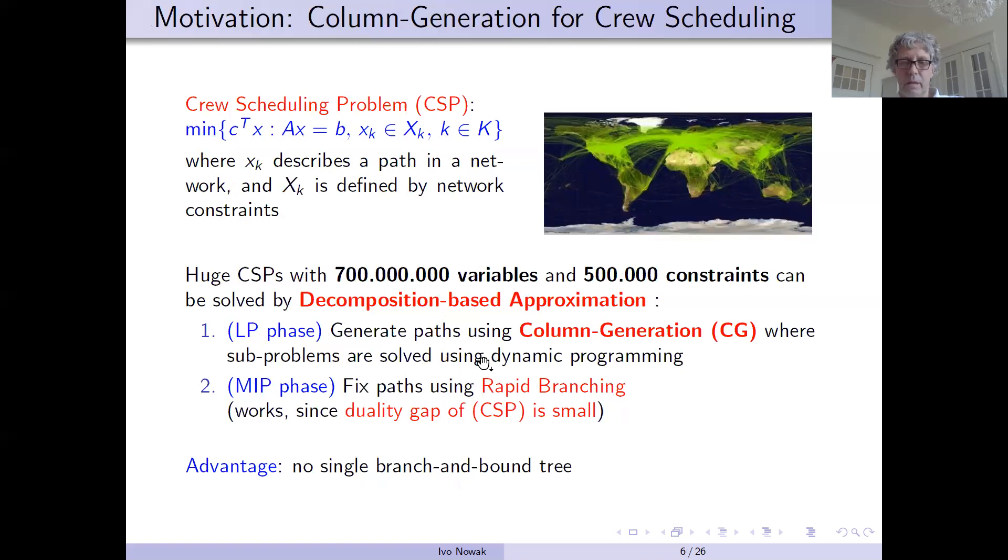At that time, we used a rapid branching for finding good solutions. This works. Relaxation is not too bad, but in our case, we couldn't use it, so we had to develop a new heuristic for finding solutions.